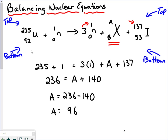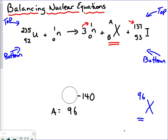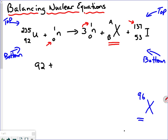So down here I'm going to write a symbol X. We don't know what X is yet — we're going to figure that out in a minute — but we know the value of A is 96. Now we have to figure out the atomic number, the number that goes on the bottom. So we add together the bottom numbers and make the bottom on the left equal the bottom on the right. The atomic number of the reactants equals the atomic number of the products. For uranium it's 92, plus for the neutron here it's 0, so we just go plus 0.